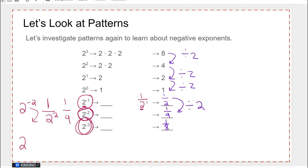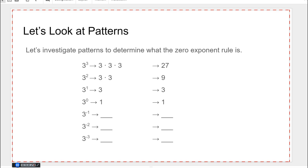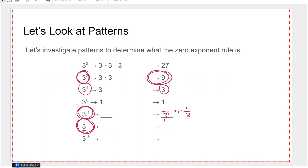Let's see if we can do it with another base. Three to the first is three. Three to the negative first is one over three to the first, or one over three. Three to the negative two means we take the base and put it in the bottom and change the exponent to positive — one over nine. So when the exponent is negative, we move the base to the bottom and change the exponent to positive. If you have a coefficient out front, leave that alone — it has a positive one exponent so you're not going to move it.